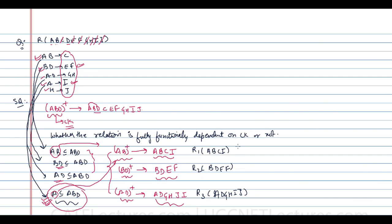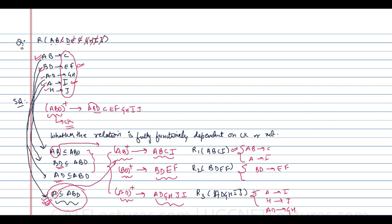From the original relation, the functional dependencies applicable on R1 are: AB determines C, and A determines I. On R2, the applicable functional dependency is BD determines EF. On R3, the applicable dependencies are: A determines I, H determines J, and AD determines GH. Now we check whether each of these sub-relations is in 2NF. For R1, we identify the candidate keys — C and I are on the right-hand side, so A and B are not. Taking AB closure gives A, B, C, I.